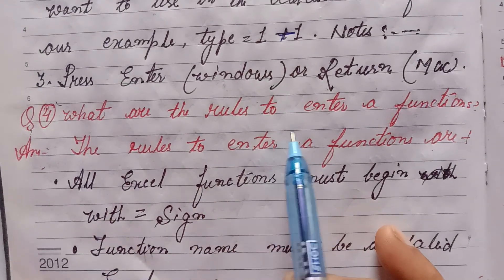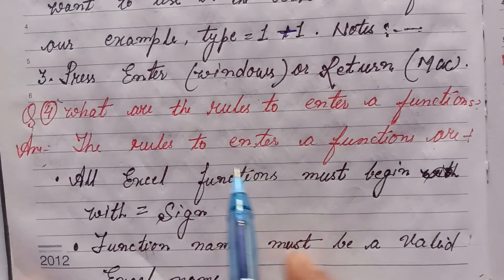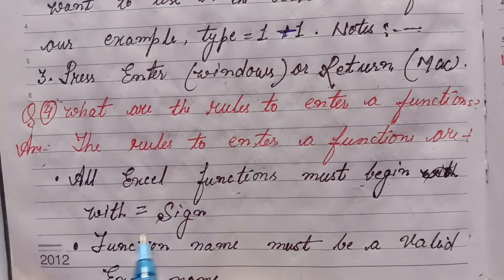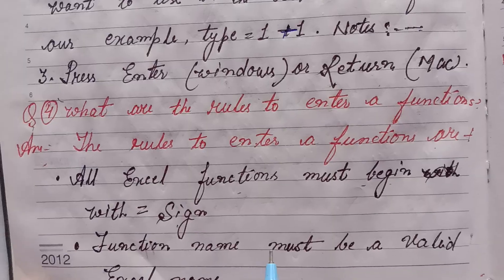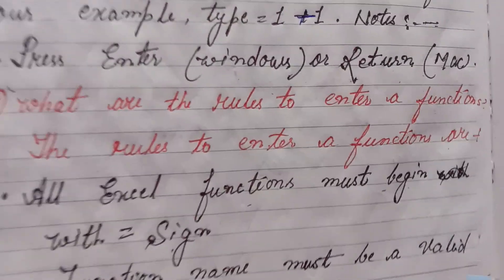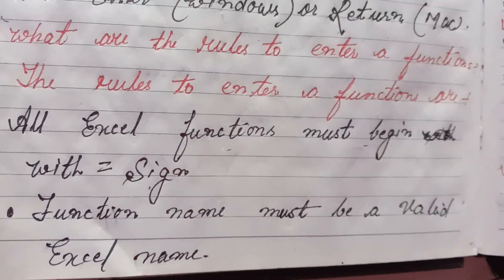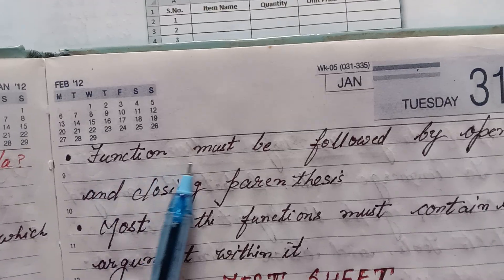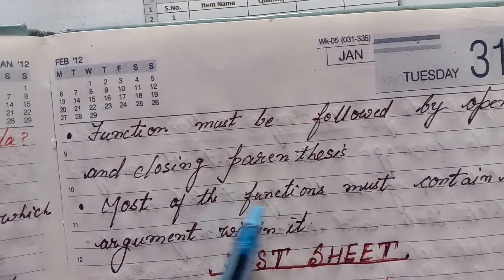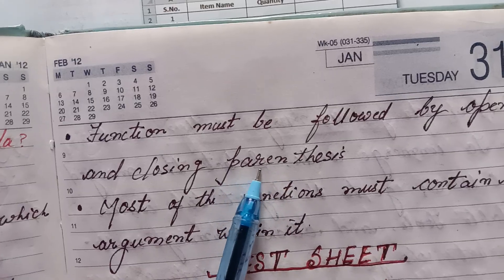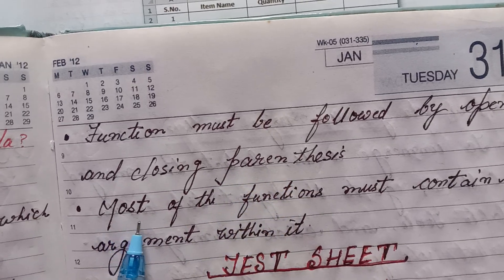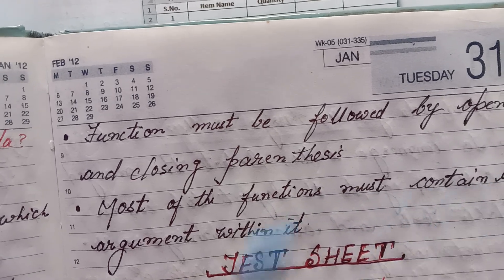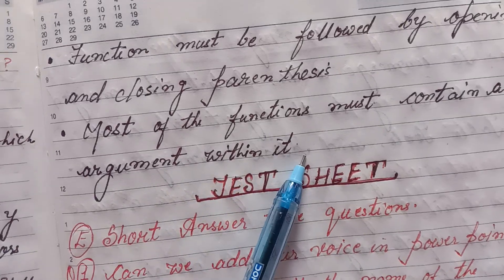Four, what are the rules to enter a function? Answer: The rules to enter a function are: all Excel functions must begin with an equal sign. Second, the function's name must be a valid Excel name. Third, the function must be followed by opening and closing parentheses. Fourth, most functions must contain an argument within them.